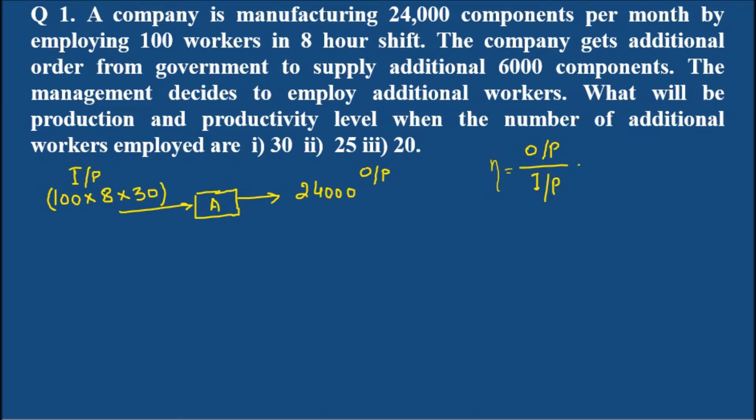If you look at this condition, you can now directly say that we can put 24,000 as our output and in the input we have 100 multiplied by 8 multiplied by 30. This can be considered as our input, leading us to unity that is 1. Present scenario, the productivity is 1.